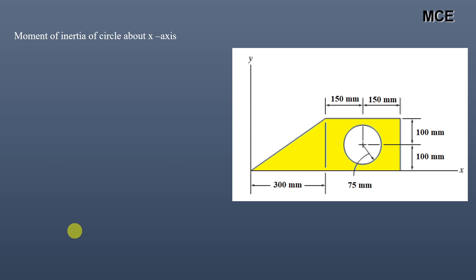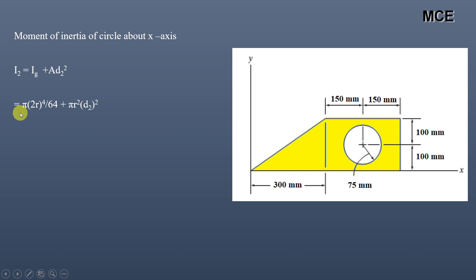Next, we calculate the moment of inertia of the circle about the x-axis. Again, using the parallel axis theorem, the moment of inertia of the circle about the x-axis equals the moment of inertia about its centroidal x-axis, plus the area of the circle multiplied by the square of the distance d₂ between the centroid of the circle and the x-axis. This equals π(2r)⁴ / 64 + πr² × d₂².